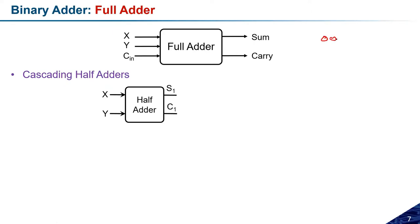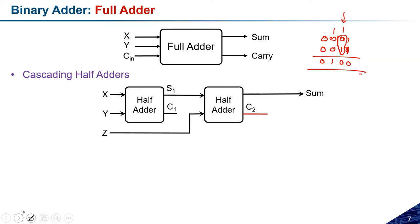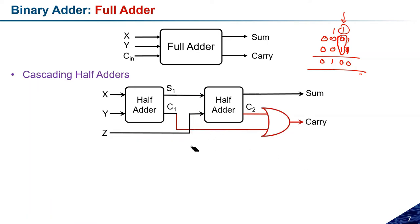For example, if we are adding binary numbers like 0001 and 0010, we process bit by bit. The sum S1 is fed to one input of a second half adder, and the carry input Cin is fed to the other input of that second half adder. The carry outputs from both half adders are then OR-ed together to give the final carry. This is how we get the full adder logic structure.